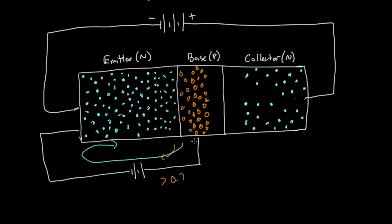Some of those electrons will fill in holes in the base, and a few will come out through the base terminal. But here's something really interesting: the base is really thin — that's the key. If the base were thick, they would all just flow out through the base. But because the base is really thin, those electrons are already close to the collector-side depletion region.